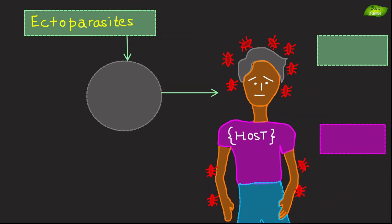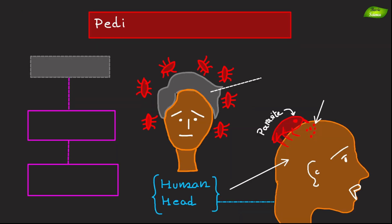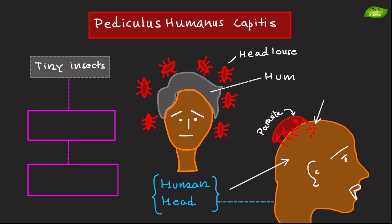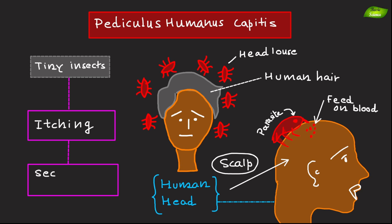Ectoparasites live on the surface of the host, such as on the skin or hair. Pediculus humanus capitis, the head louse, are tiny insects that live in human hair and feed on blood from the scalp, causing itching and potential secondary infections from scratching.